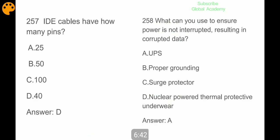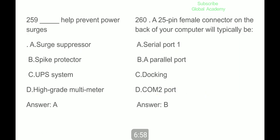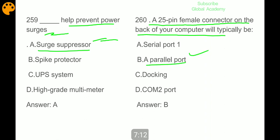IDE cables have how many pins? 40 pins. What can you use to ensure power is not interrupted resulting in corrupted data? UPS. Data help prevent power surges: surge suppressor. A 25-pin female connector on the back of your computer will typically be a parallel port.